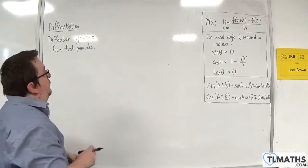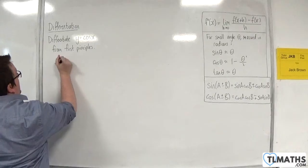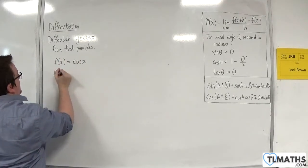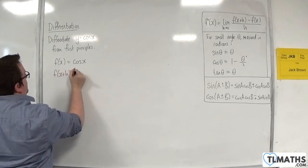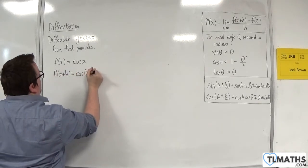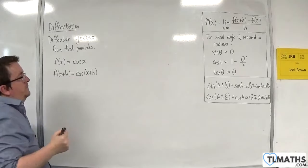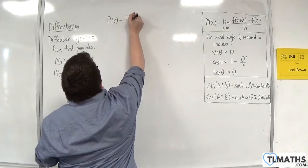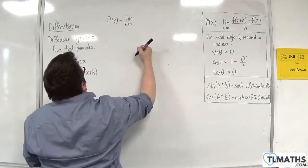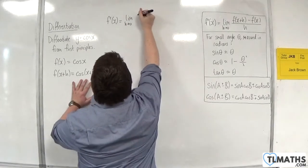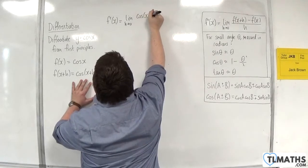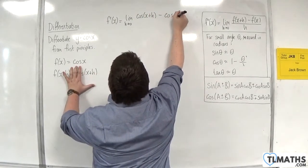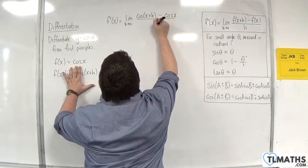So first of all, I'm going to identify that f of x will be cosine of x, and f of x plus h will be cosine of x plus h. So f prime of x will be the limit as h tends to 0 of cosine of x plus h, take away cosine x, divided by h.